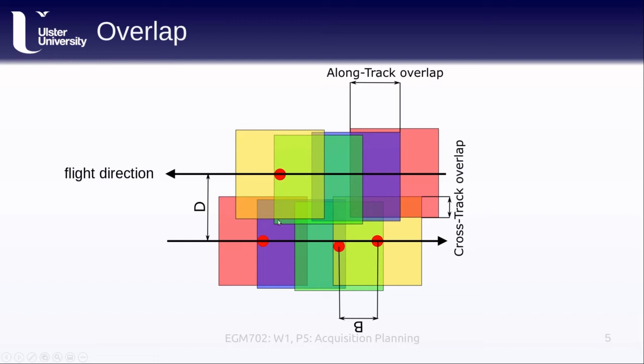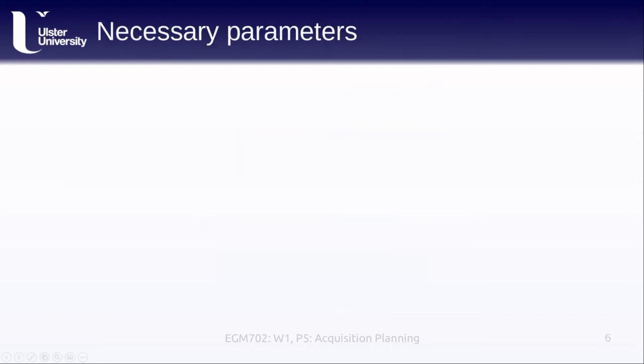Our camera positions are recorded here as red dots, and you can see where our B is in relation to these camera centers. We also have the cross-track distance, D, between our different cameras.